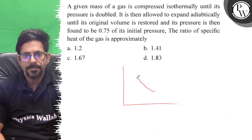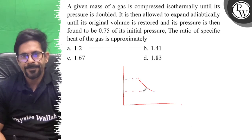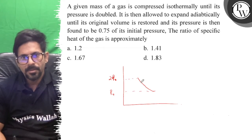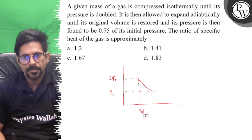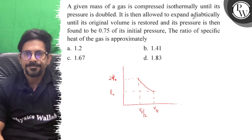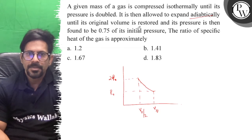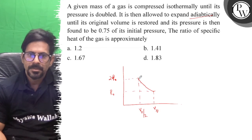The pressure doubles from P0 to 2P0, and the volume halves from V0 to V0/2. Then it is expanded adiabatically until the original volume is restored, so the volume returns to V0. The pressure at this point is found to be 0.75 of the initial pressure.